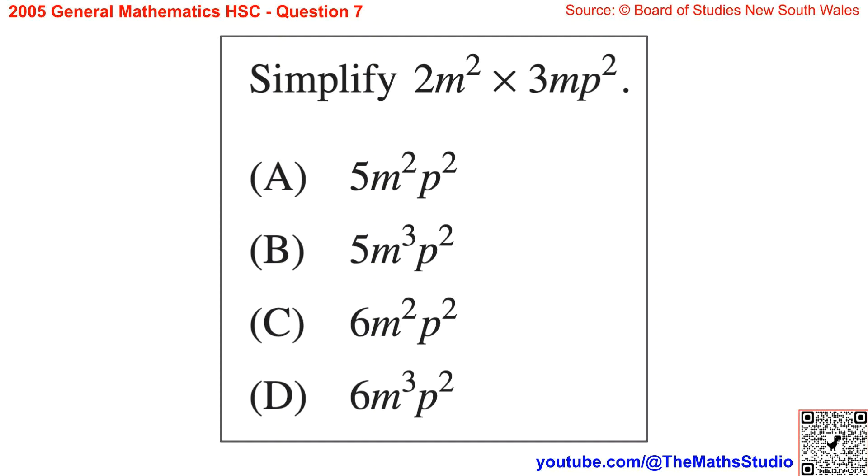Question 7. Simplify 2m squared times 3m p squared.